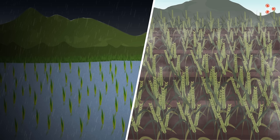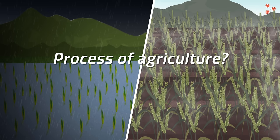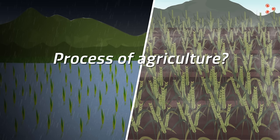This is all about the types of crop seasons in India. What about the process of agriculture? What are the agricultural practices undertaken by farmers? We will learn about these in our next lesson.